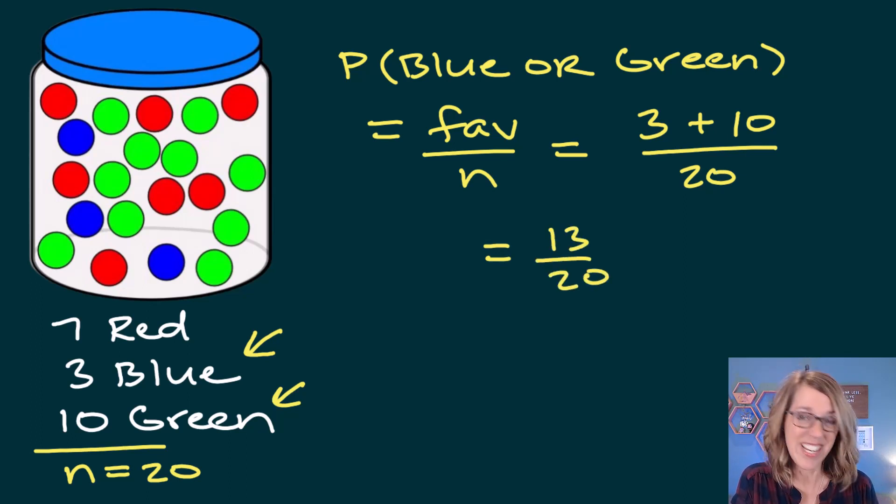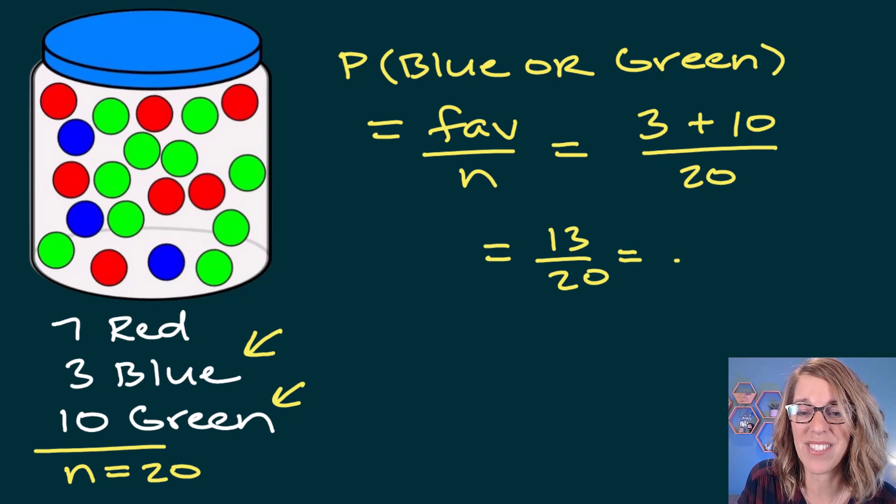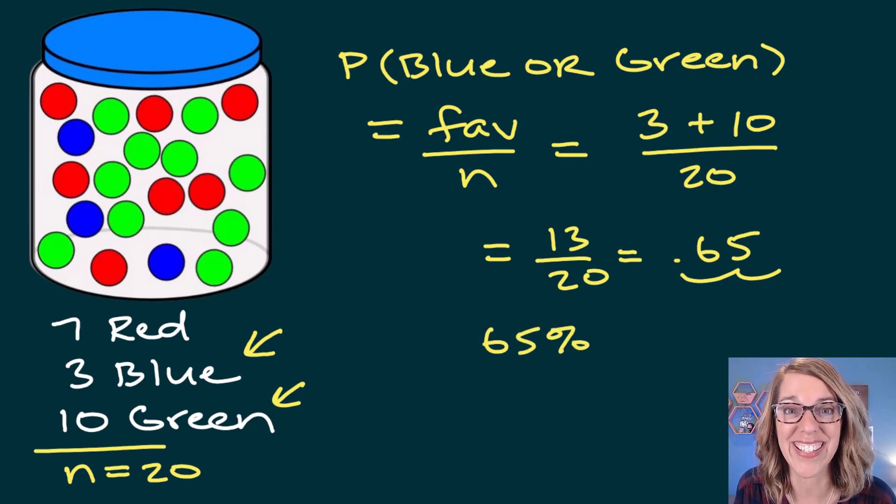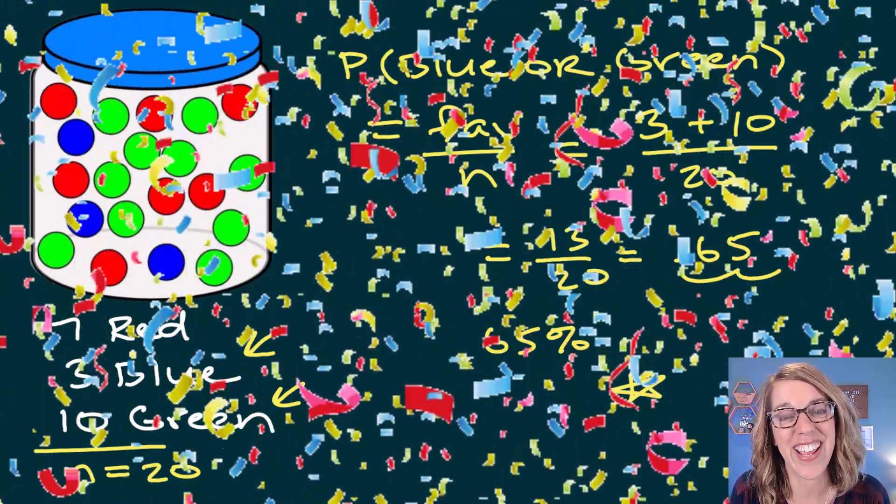Let's divide this one in the calculator. 13 divided by 20, and I end up with 0.65. Moving that decimal place two places, I can also write this as 65%. How did you do? Hopefully you did great.